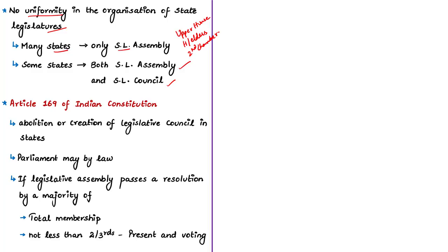When we say state legislature, it includes the governor along with the chamber or chambers, as per Article 168 of the Indian Constitution. Article 169 deals with abolition or creation of legislative councils in states. This article states that Parliament may by law provide for the abolition of the legislative council of a state which has one, or for the creation of a legislative council in a state which does not have one. But can Parliament do it unilaterally? The answer is no.